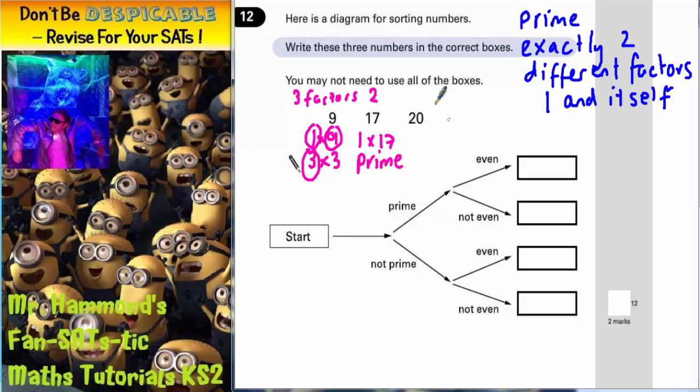For number 20, we can have 1 times 20, 2 times 10, and 4 times 5. So that's actually got six factors. So that's definitely not prime. So 9 is not prime. 17 is prime because it's only got two factors. And 20 is not prime either.